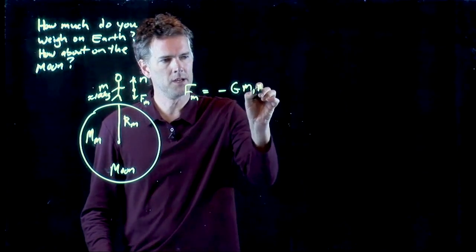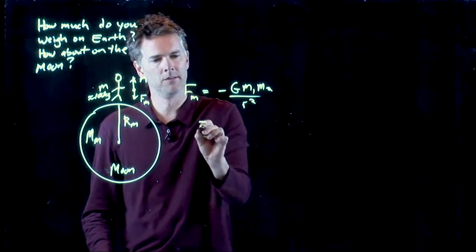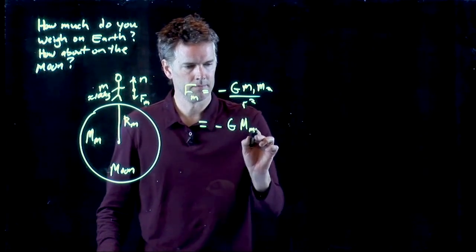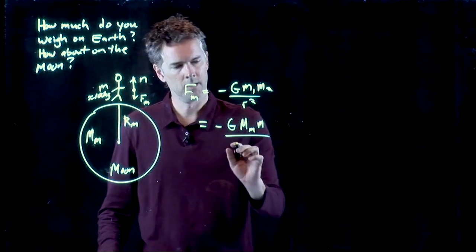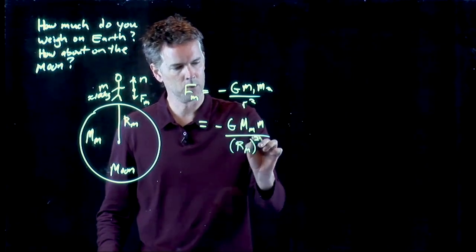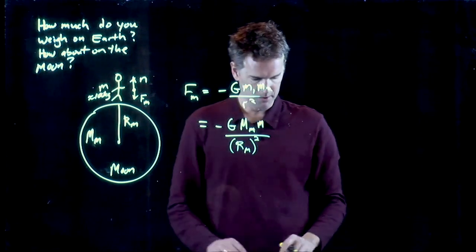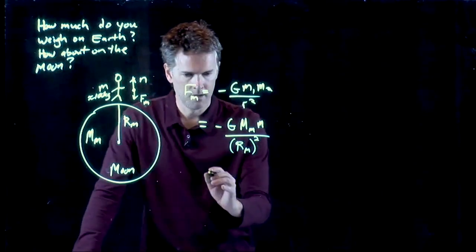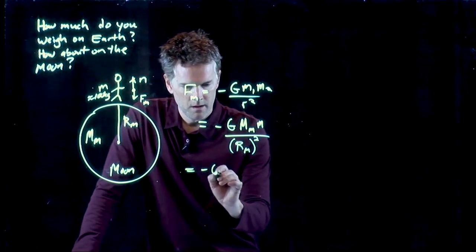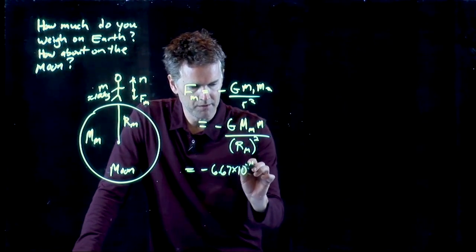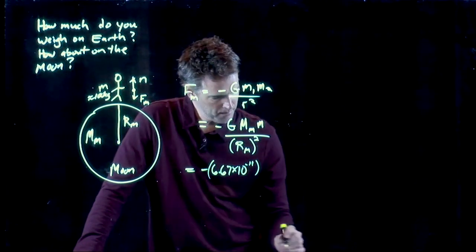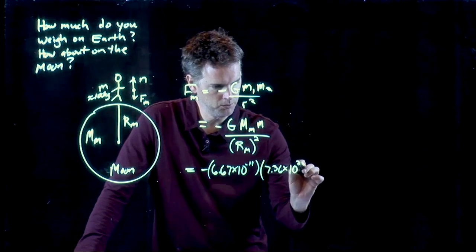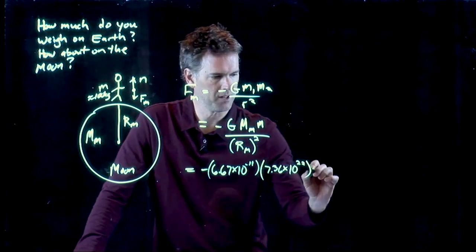And let's calculate what f sub m is in this case. It's still negative g m1 m2 over r squared. But now, of course, we have the mass of the Moon, the mass of u, and the radius of the Moon, quantity squared. And let's punch in some of those numbers and see what we get. I have them right here for you. This is still 6.67 times 10 to the minus 11.